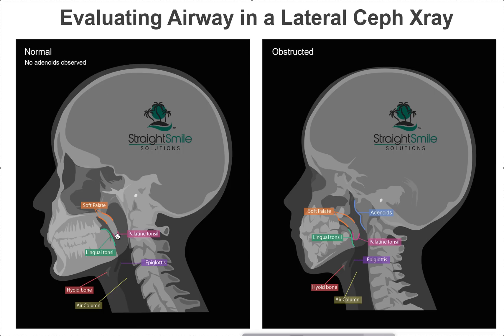The palatine and lingual tonsils can be seen clinically — usually the palatine, not as much the lingual — but you can definitely see the lingual in the lateral x-ray. If you want to see the oral airway going down, you should be able to see some daylight right here, but you can see it's almost nothing there. Here you can see a little daylight going down, but here it's touching. You can also check your Mallampati score clinically by saying 'ah' and using a tongue depressor.